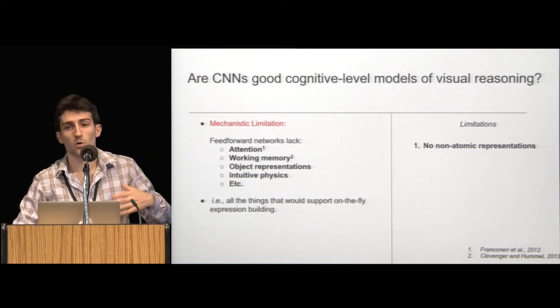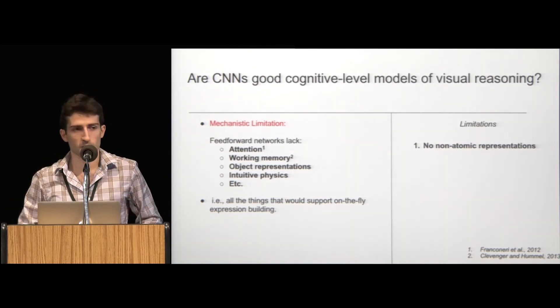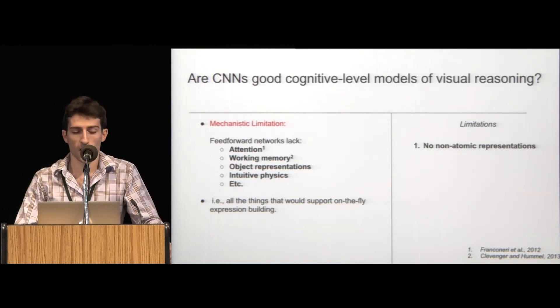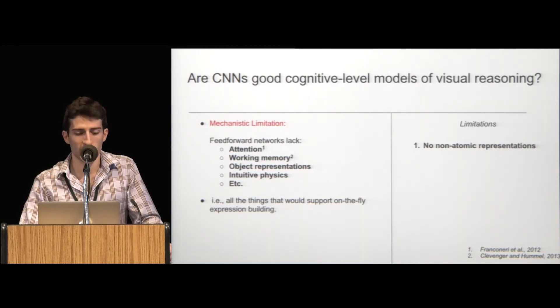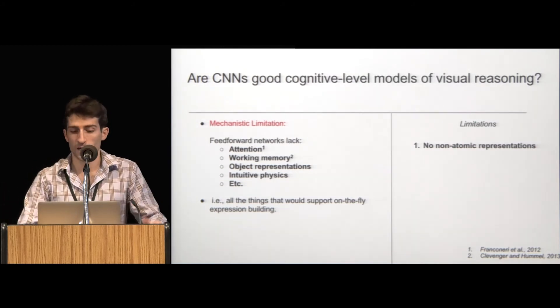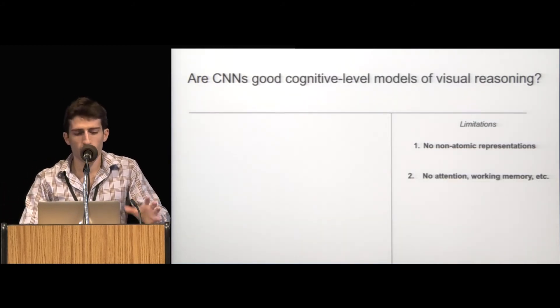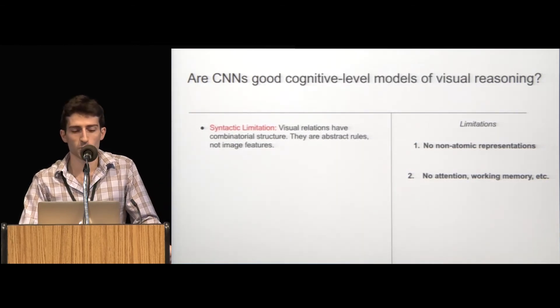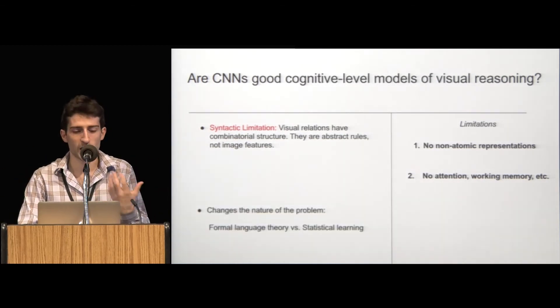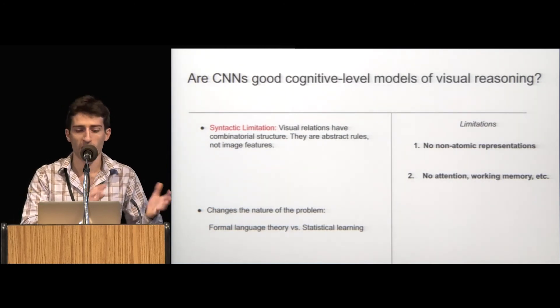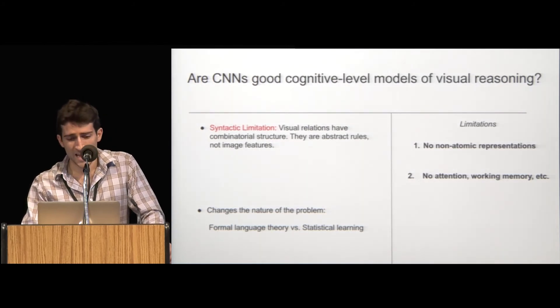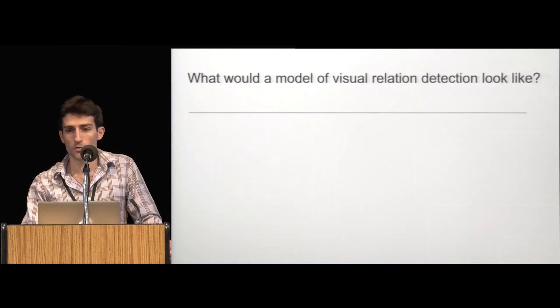What's more, there are mechanistic limitations. So, CNNs don't have the things that people speculate we use to solve these visual relations problems. For example, Franconeri claims that we need attention. Clevenger and Hummel say we need working memory. And, of course, we have all the other things we've been talking about today on the cognitive side of things. Object representations, intuitive physics, and in general, all the things that would support this on-the-fly expression building. And there's a kind of final computational limitation or syntactic limitation, which is that visual relations have combinatorial structure. They're abstract rules and not image features. And that changes the nature of the problem. So, it resembles a bit more like formal language theory and a bit less like statistical learning. Incidentally, there is a generalization of formal language theory in two dimensions. So, stimuli have structure. That makes the problem hard.